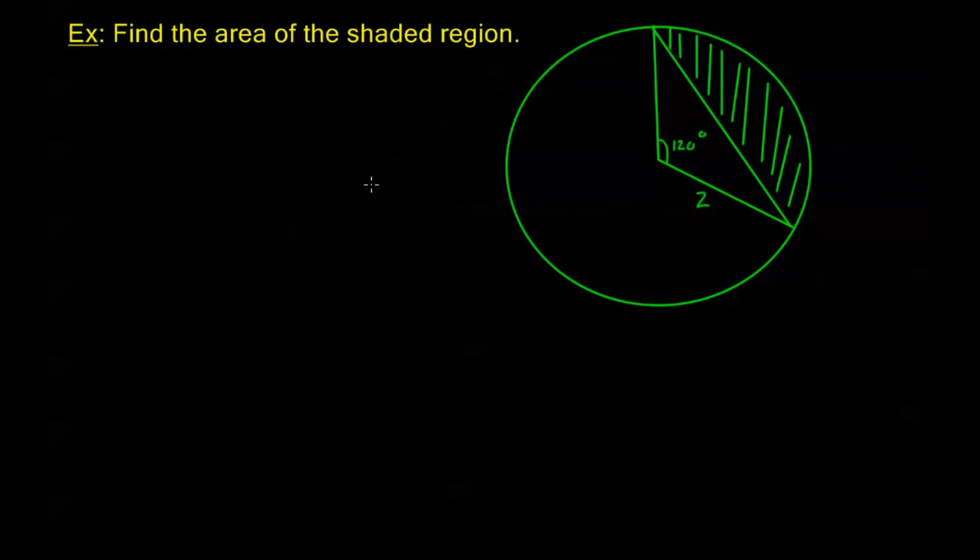Now let's see even a more complicated example where this becomes useful. Let's say we're given this diagram and we're asked to find the area of the shaded region. So that shaded region right there, we're going to need to use a little bit of context clues here. We see this as a circle of radius 2.